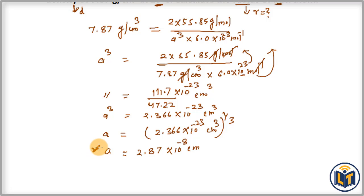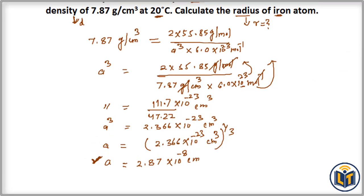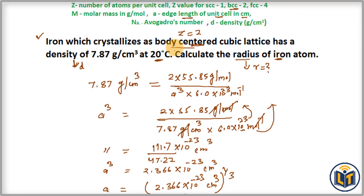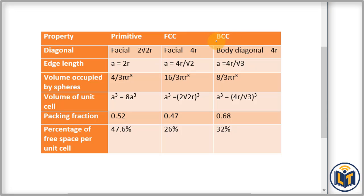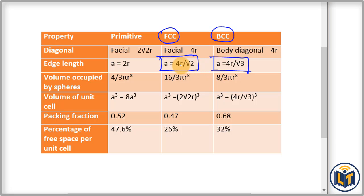Now we can find the relation between the length of the unit cell and the radius for a BCC structure. Looking at the table, the relation for BCC structure between the unit cell length a and the radius R is given. This is distinct from the relation for a primitive structure.